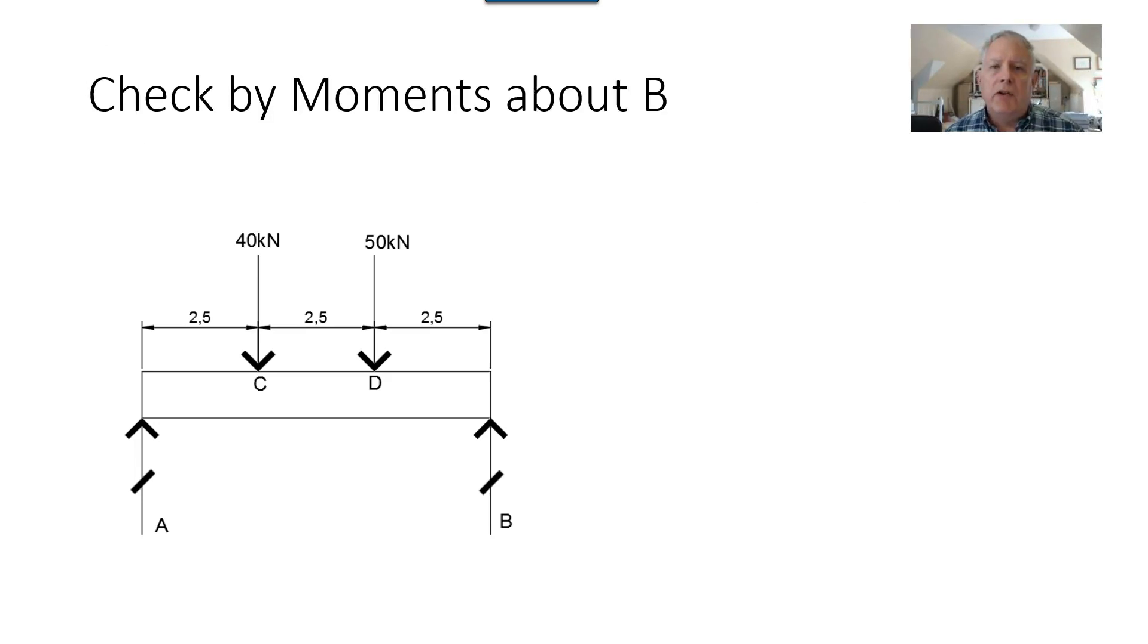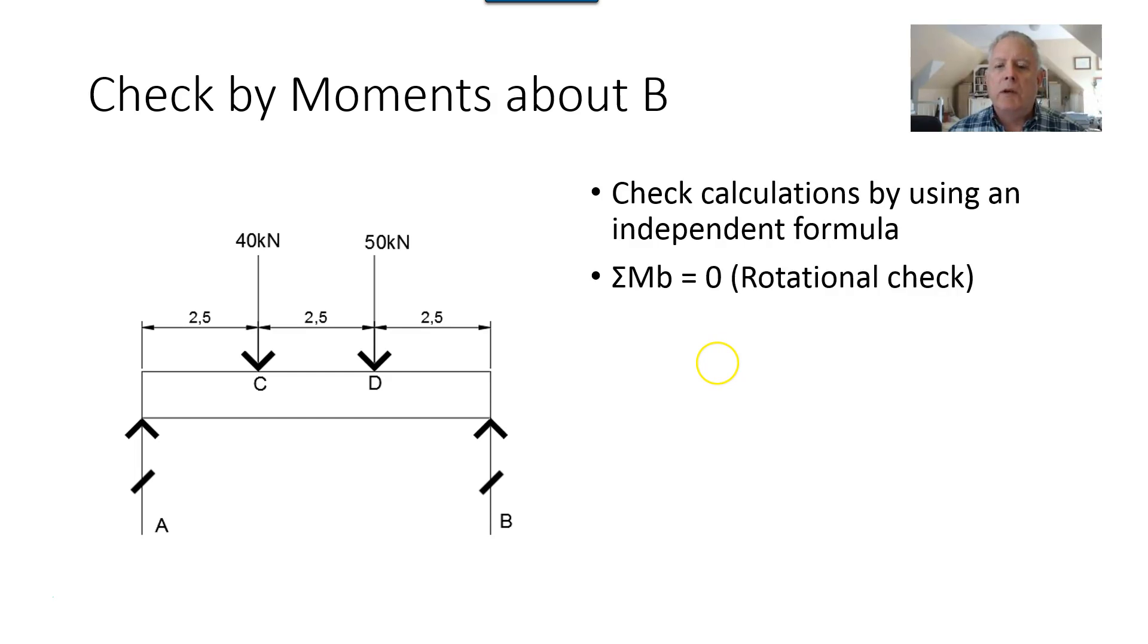Finally, we need to check because it's possible that we made a mistake in our calculations during a problem setup. So in this case, we need an independent equation to check by. Use sum of the moments about B. This is rotational equilibrium. So all distances in this case must be measured from point B instead of point A.